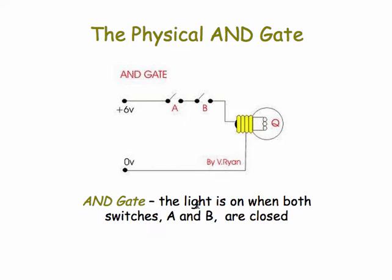An AND gate is one in which the light would be on only when both switches, A and B, are on. So A and B represent the inputs, and the light represents the output.